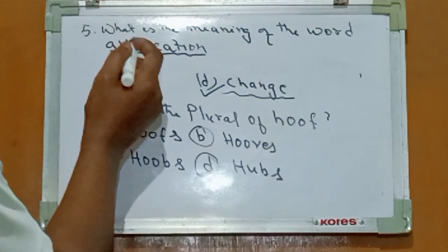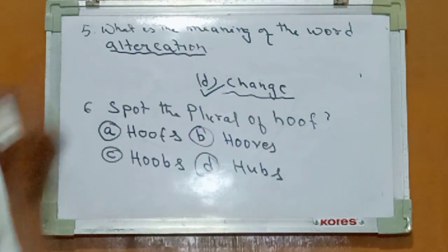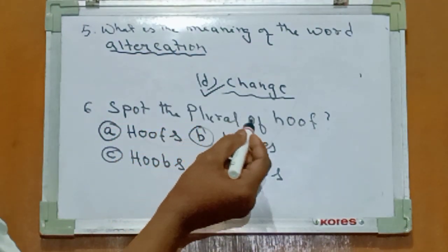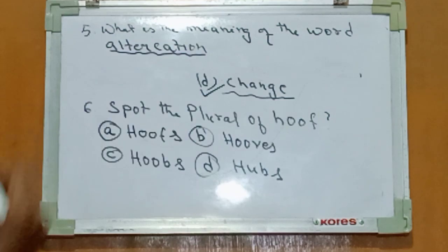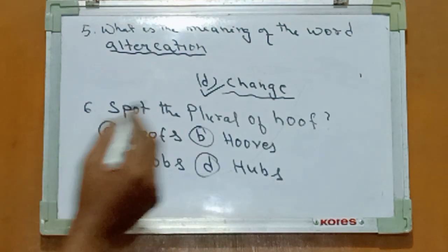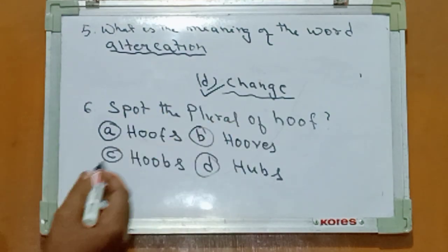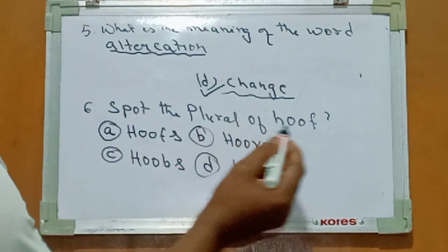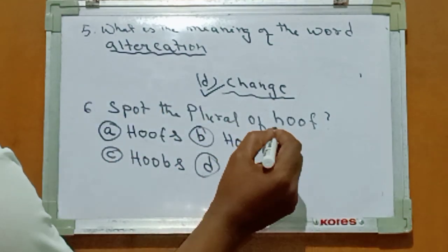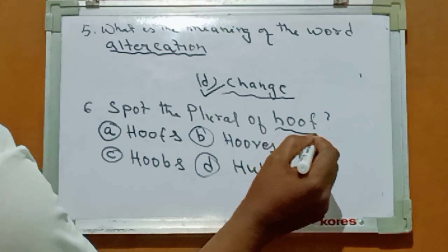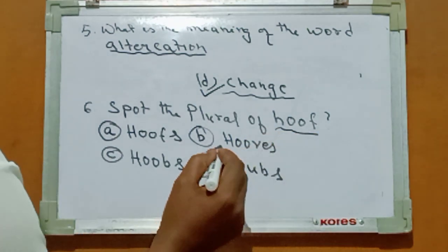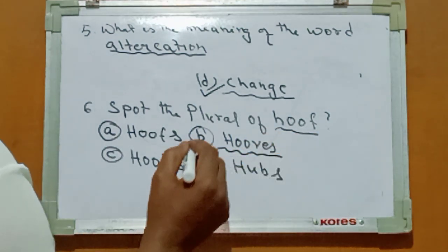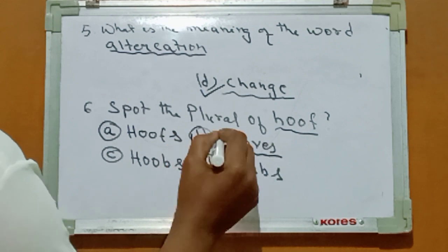Number six: spot the plural of HOE. The plural of HOE is H-O-O-V-E-S, Option B.